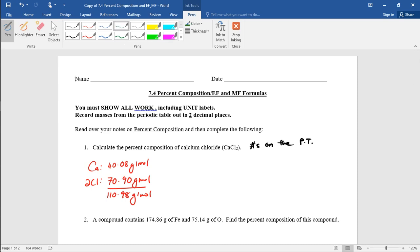Now they're asking you what percentage of that 110.98 is calcium. So percent calcium is equal to the mass of calcium that you got from the periodic table over 110.98, which is the total mass of the compound, times 100%, and that would be 36.11%.